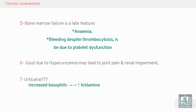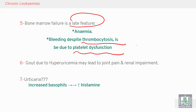Pulmonary failure is a late feature. There is also anemia and bleeding due to platelet dysfunction. There is a failure of production of normal platelets with normal function. We have thrombocytosis — an increase in the platelet count. The normal platelet count is 150,000 to 400,000 per microliter, but in chronic myeloid leukemia the platelet count in peripheral blood may reach 2 million per microliter.